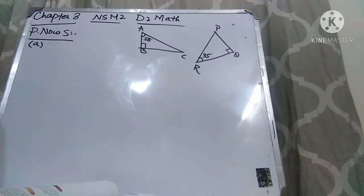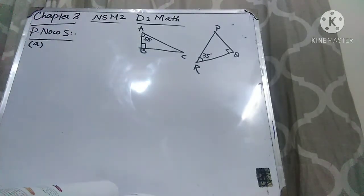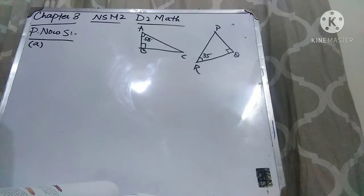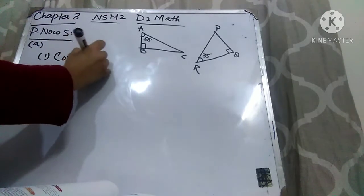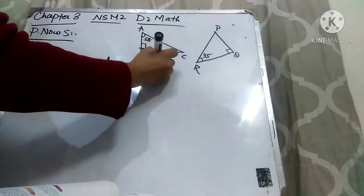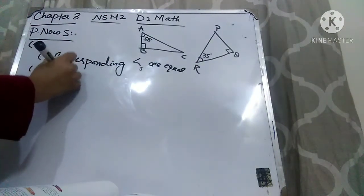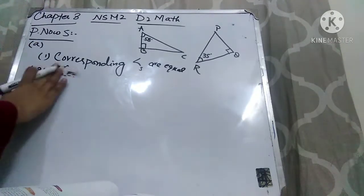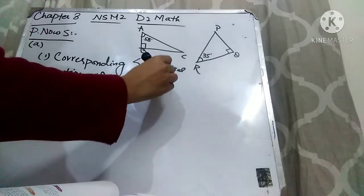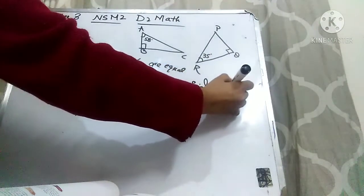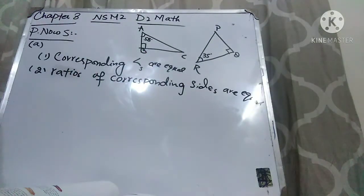Okay students, in practice now 5, in part A, two figures are given — ABC and PQR — and they are asking: is triangle ABC similar to triangle PQR? Explain your answer. Now we have to find out whether these two triangles are similar or not. Remember that two figures are similar if they have exactly the same shape but not necessarily the same size. It means their corresponding angles are equal, and the ratio of corresponding sides are equal. When these two conditions are met, we will say the figures are similar.